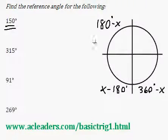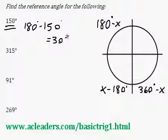So 150 degrees, that's on the second quadrant, so we can use this formula. 150 is x, so 180 minus 150 is 30 degrees. That's it.